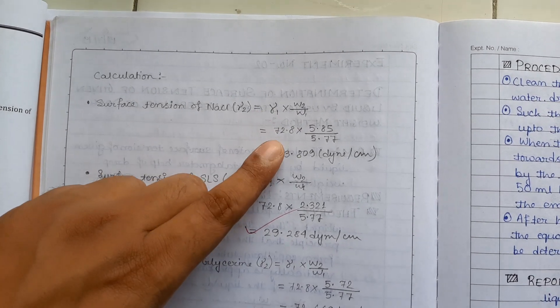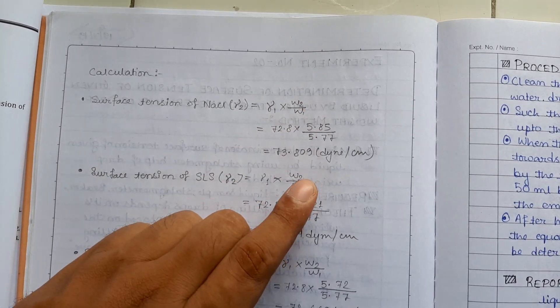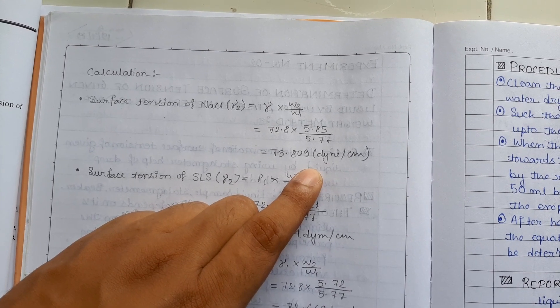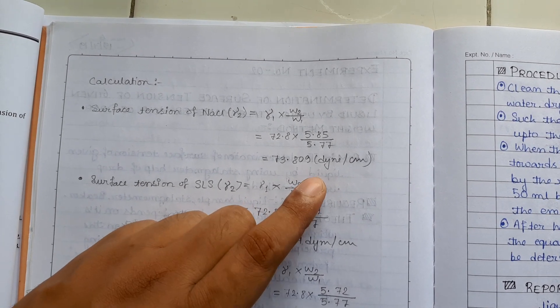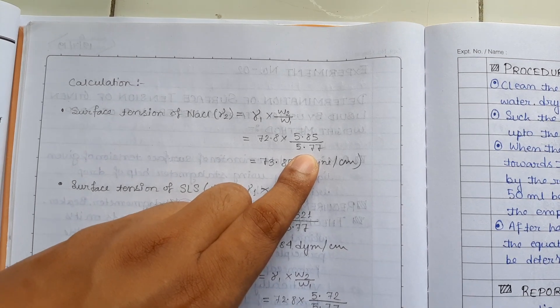Gamma 1, that means the surface tension of water, 72.8. W2, that is the weight of liquid that you got from upper mark to lower mark by using stalagmometer. And W1, that is the weight of water, distilled water, reference liquid.